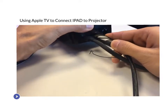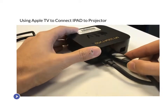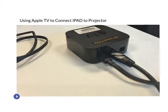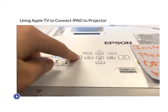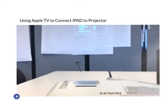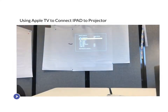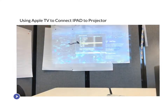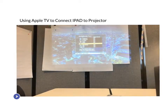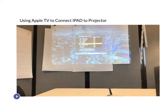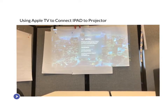Now once you've plugged that in, head back to the projector. On the projector, hit source search — it's going to search for your source. It should be HDMI 2 because that's how it's plugged in on the projector. Once it finds that, it displays the AirPlay screen of the Apple TV controller, and the Apple TV name is also displayed.